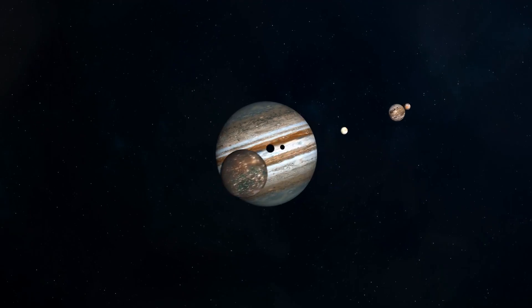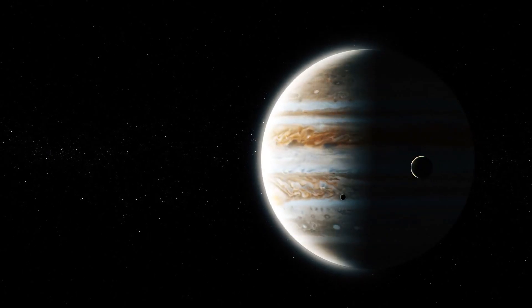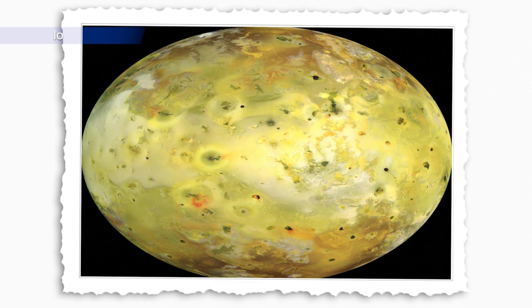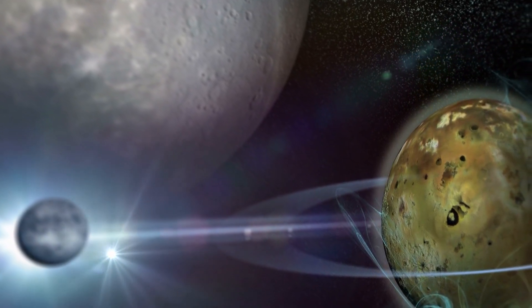Jupiter has several moons, which is an interesting topic to research. The four largest Galilean moons, Io, Europa, Ganymede, and Callisto, are among the gas giant's 79 known moons.